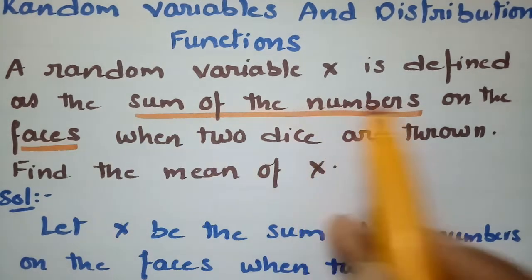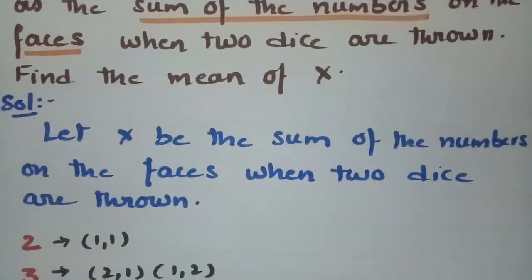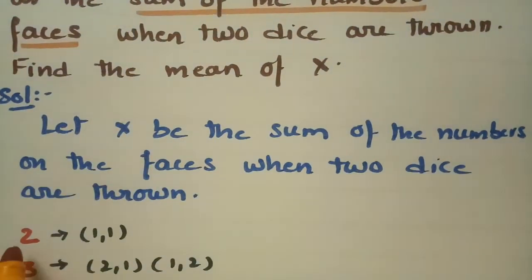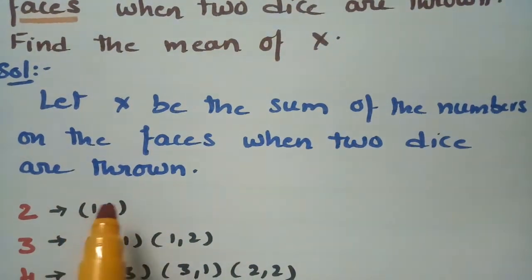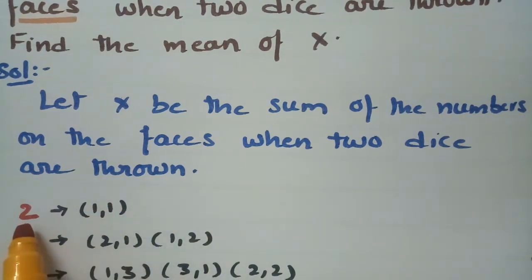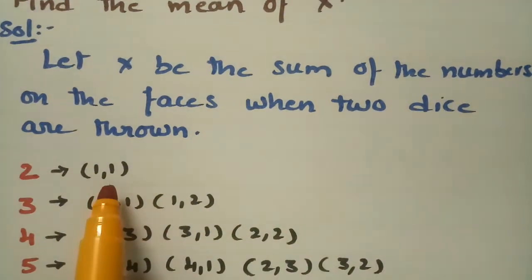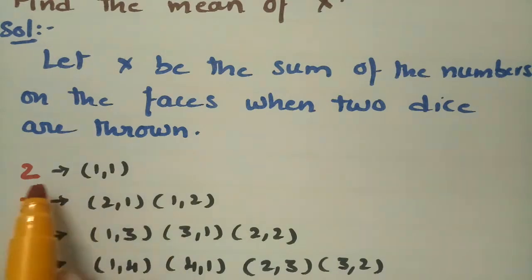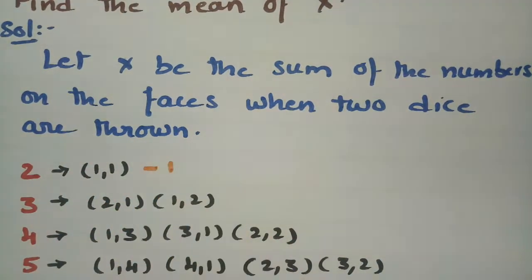For getting two as a sum when two dice are thrown, the first dice shows one and the second dice shows one. If we add up, the sum on the faces is two. The chances for getting two when two dice are thrown is one, so this is 1 by 36.